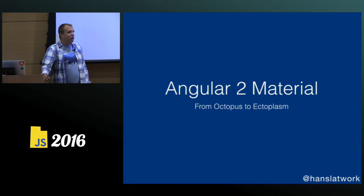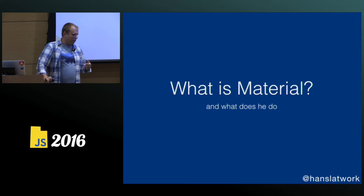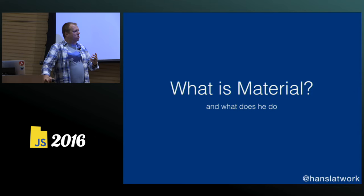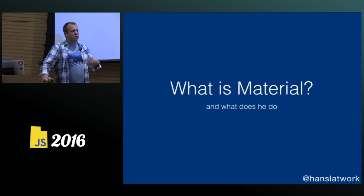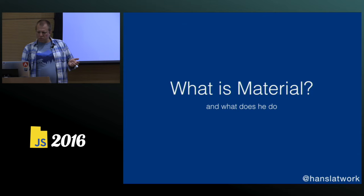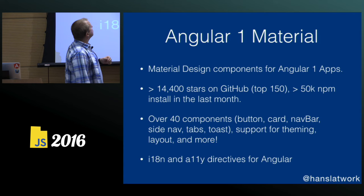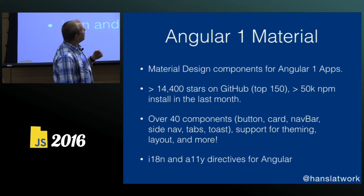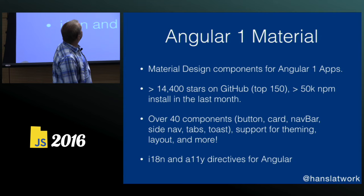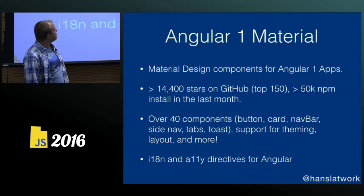For those who don't know — it was about 40% hands down — Angular Material was basically the project built for Angular 1. It was a community project following the material design spec for the web made by Google. It was a set of components and libraries made for Angular 1. It has over 14,400 stars on GitHub, it's in the top 150, and it has over 50,000 NPM installs in the last month. It's a huge project with over 40 components.